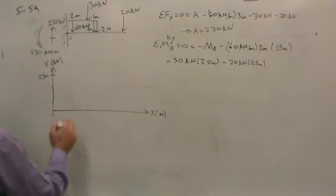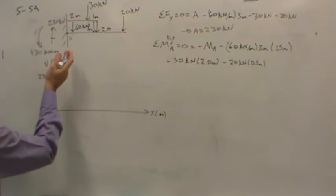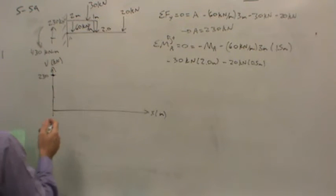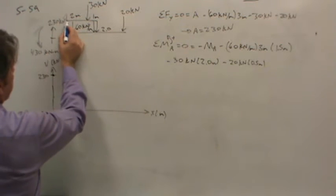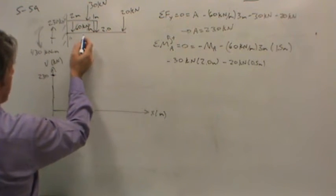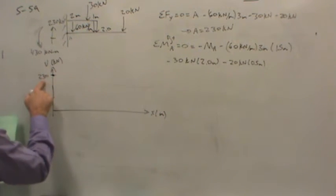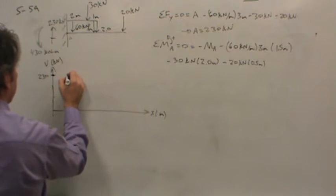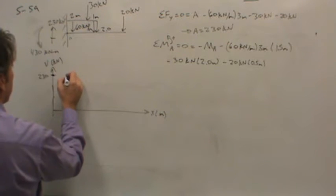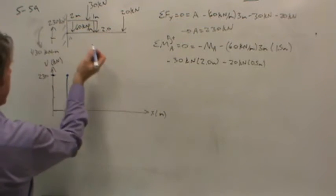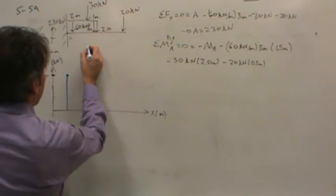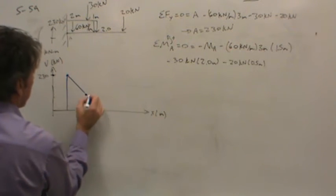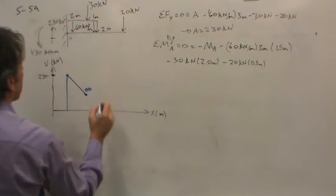And so basically what happens is the shear load moves down as we move along the beam. So how far does it move down? Well, if it's 60 kilonewtons per meter and we have 2 meters worth, well then that's 120 kilonewtons. So if you take 120 kilonewtons from 230, let me orient this with the painting. So there's the 230, subtract 120 kilonewtons. At this point you should come down to 110 kilonewtons.